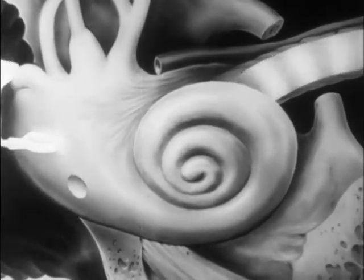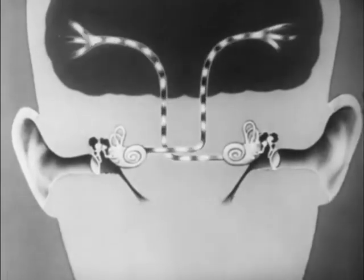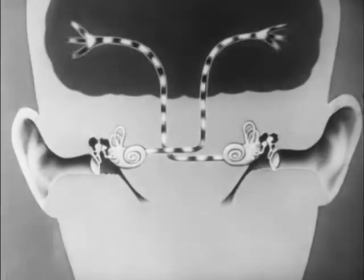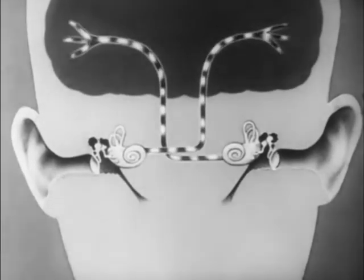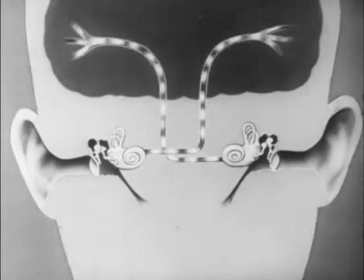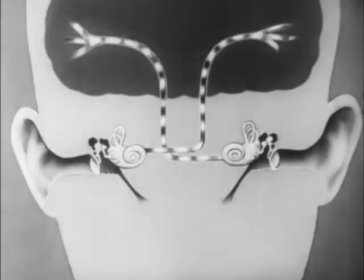From the auditory nerve, the nerve impulses go on to the brain. This is how we hear. Most of the impulses reaching either ear go to the opposite side of the brain.